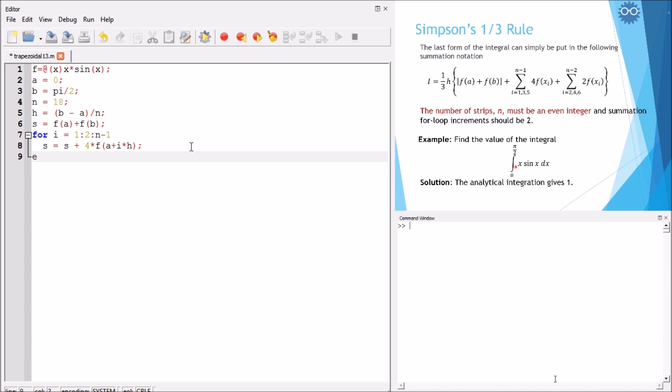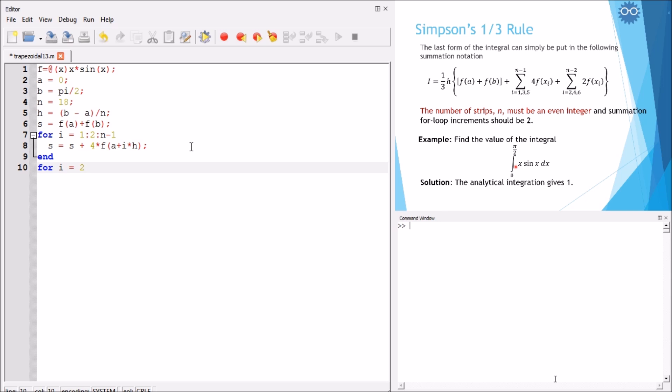The second loop for i equals to 2, step 2, up to n minus 2, according to the summation, s equals to s plus 2 multiplied by f of a plus i multiplied by h.